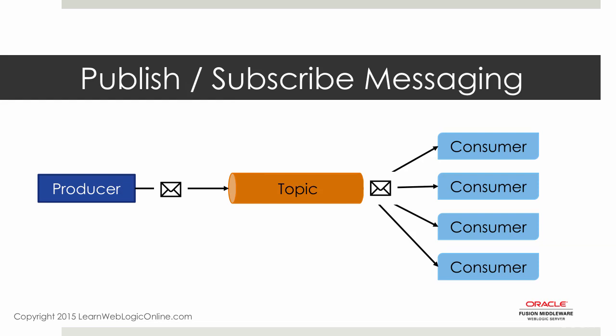In a publish-subscribe model, you can have one or more producers and also one or more consumers. Consumers can register to receive messages from producers. However, in order to receive a message, the consumer must be connected to the destination in a pub-sub messaging model. Within WebLogic, there is a notion of durable subscribers and persistent storage. We can actually persist messages for clients — durable subscribers — that are not connected at that time. When the durable subscriber connects at a later time, they'll be able to pick up the messages they missed.